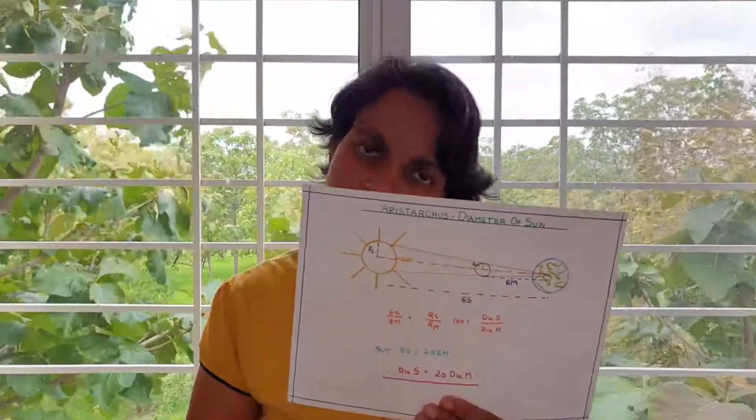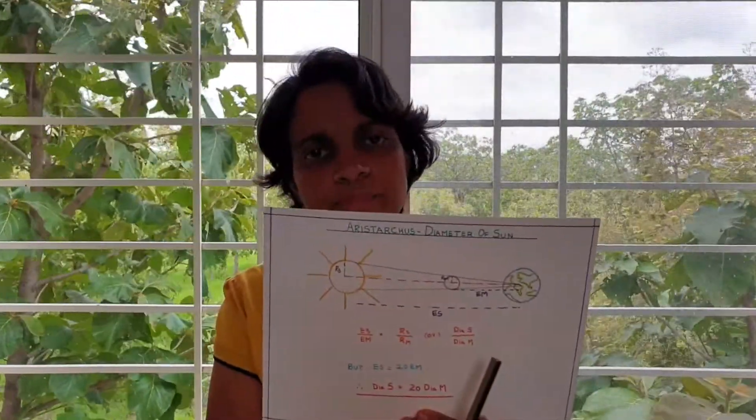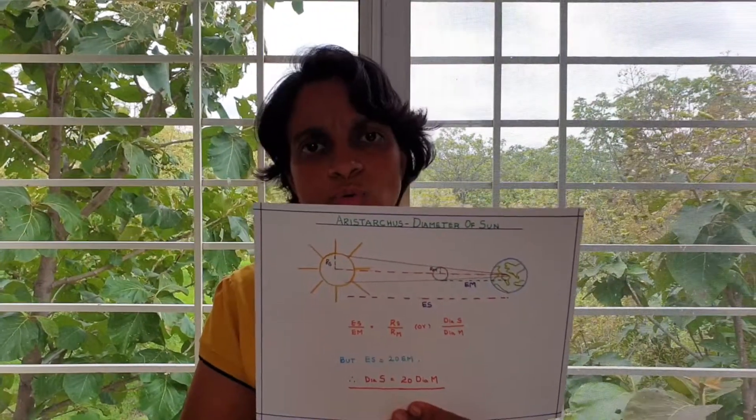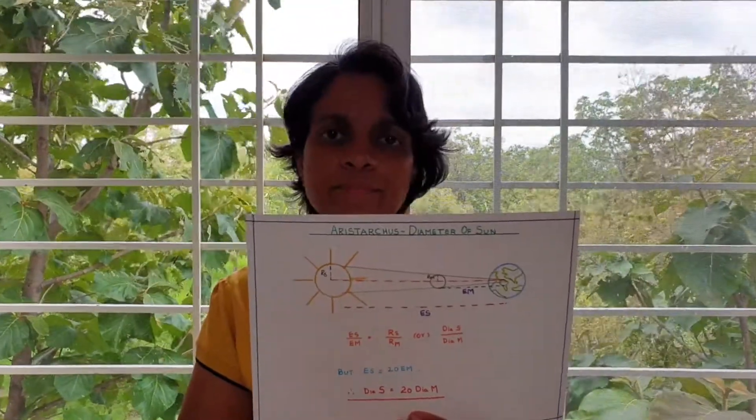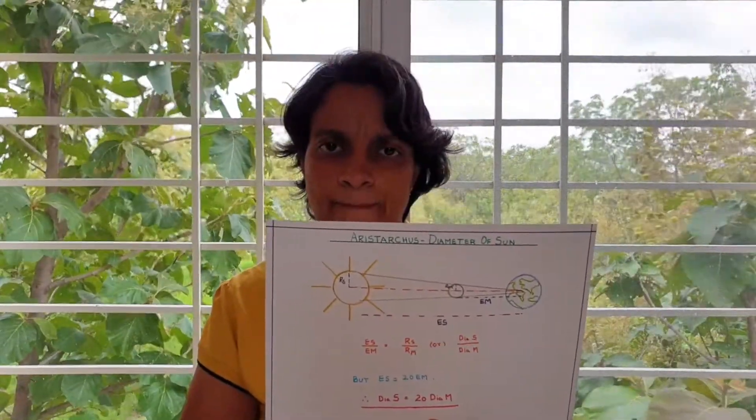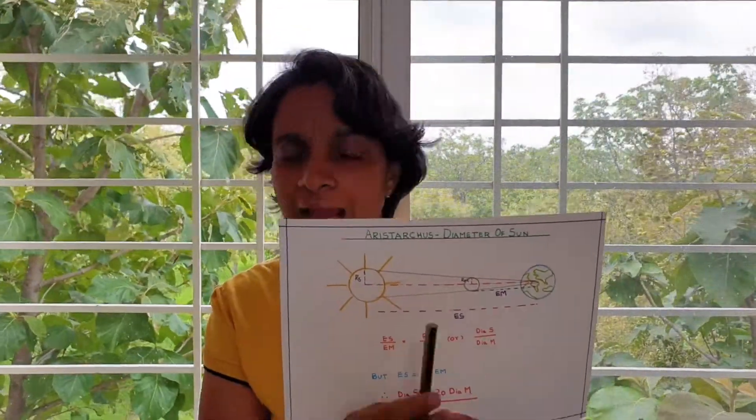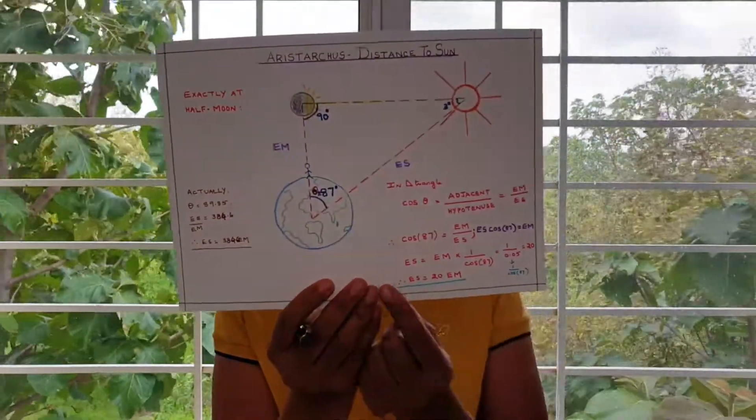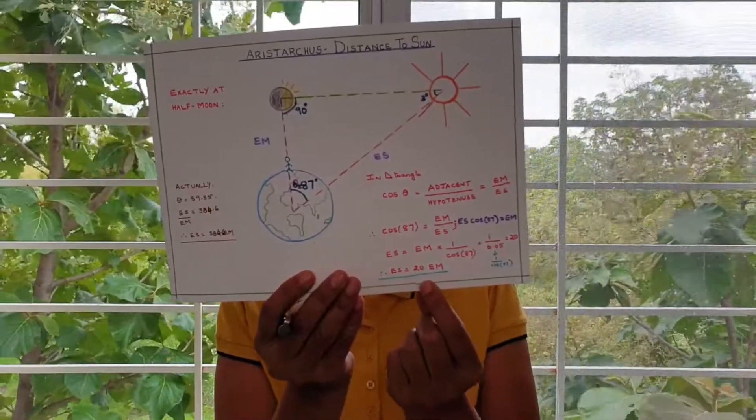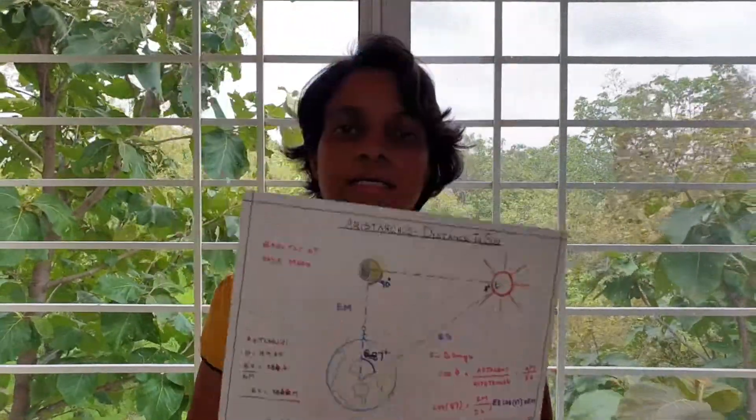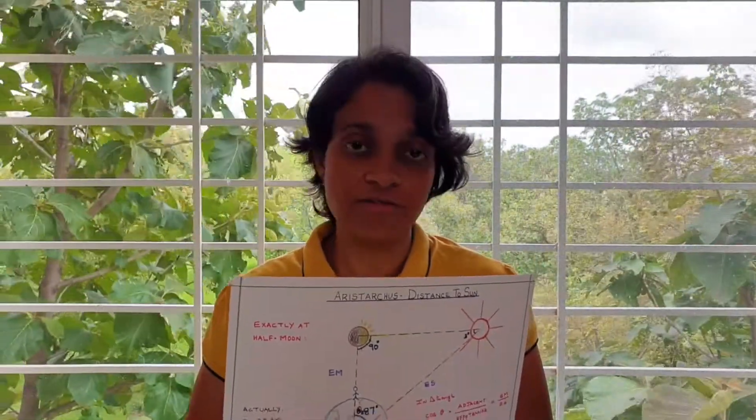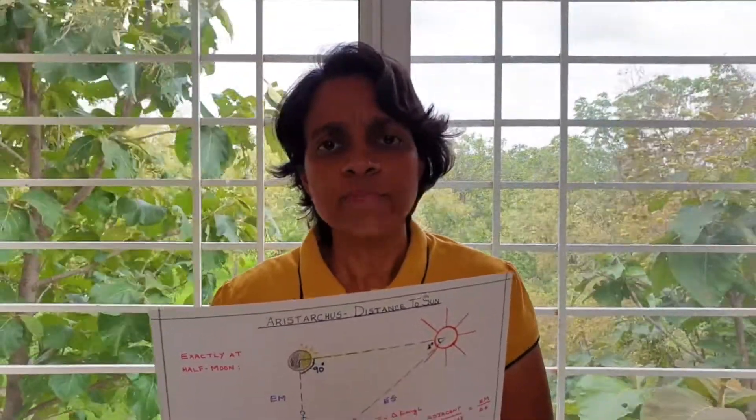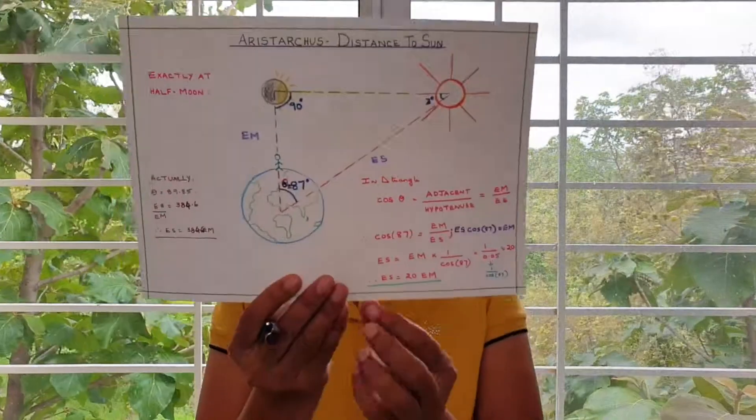So if we go ahead with the equation, ES by EM will be equal to diameter sun by diameter moon. Simple logic. And if we use yesterday's equation again, ES equals 20 times EM, distance of sun from earth equals 20 times the distance of moon from earth. That's yesterday's calculation.